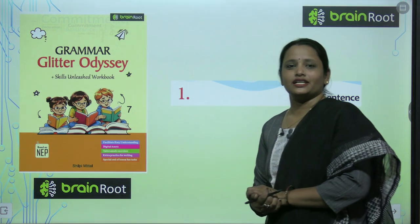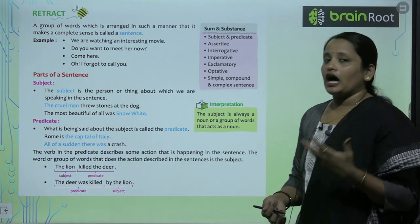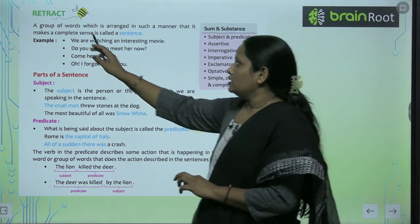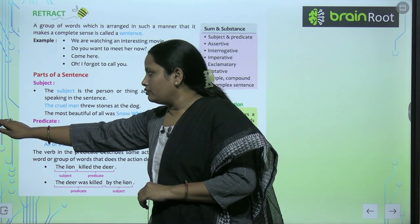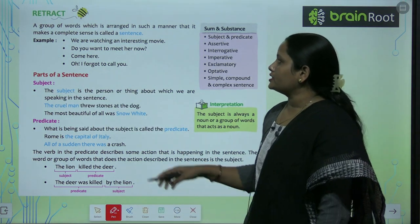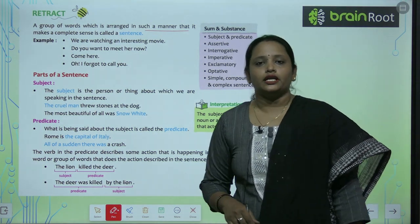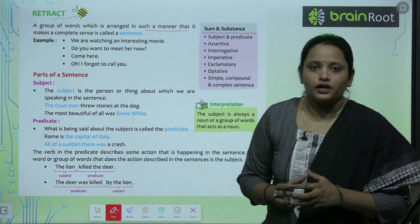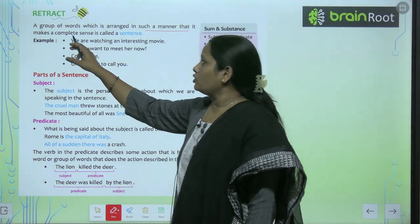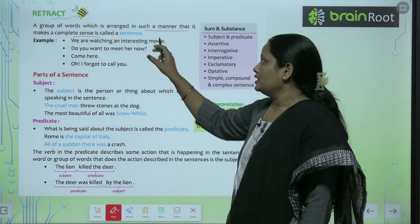Do you know what is a sentence? A sentence is a group of words that we use in our daily life. A group of words which is arranged in such a manner that it makes complete sense is called a sentence. Kuch words ke group ko banana jo ek correct tariqe se arranged ho aur uska kuch na kuch sense nikalna chahiye — these group of words are called sentences.